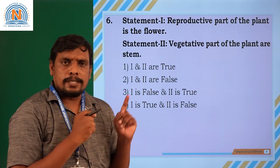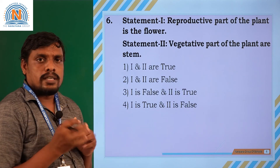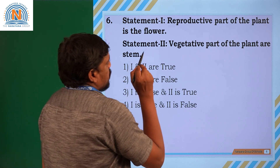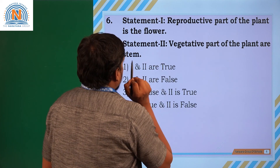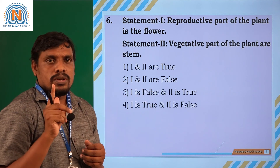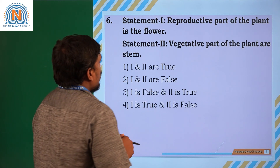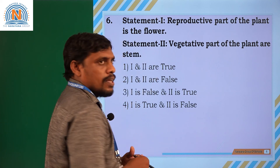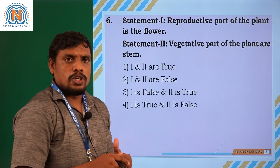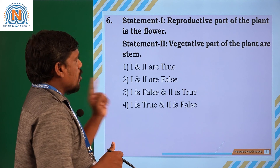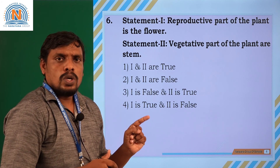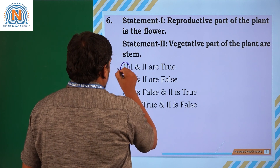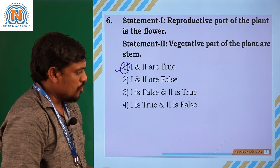There are two statements given. Let us read each statement. First statement: the reproductive part of the plant is the flower — this is correct. Second statement: the vegetative parts of the plant are stem, leaf, and root — absolutely correct. Statement one is correct and statement two is also correct, so option one is the answer for this question.